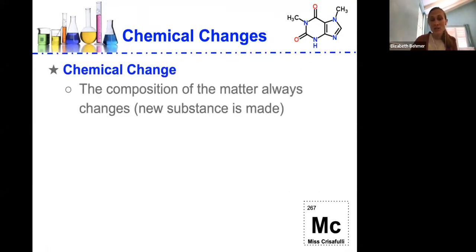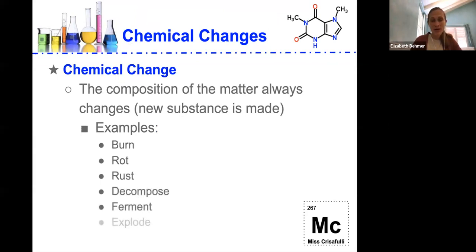In a chemical change, the composition of the matter will always change, and a new substance will be made. So for example, when we burn something, or it rots, or it rusts, or it decomposes, or it ferments, or explodes, the composition of the matter will change into something totally different where a new substance is made.